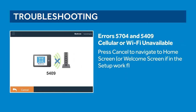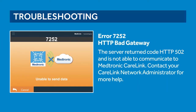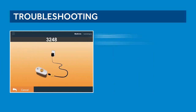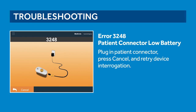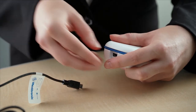Errors 5704 and 5409: cellular or Wi-Fi unavailable. When the tablet does not have a functional network connection prior to downloading data from the device, press cancel to navigate to the home screen or welcome screen if in the setup workflow. Error 7252: HTTP bad gateway. The server returned code HTTP 502 and is not able to communicate to Medtronic CareLink. Contact your CareLink network administrator for more help. Low battery error code 3248: the patient connector has less than 5% battery left. If this happens, press cancel, plug the connector into a power outlet, and retry the device interrogation.